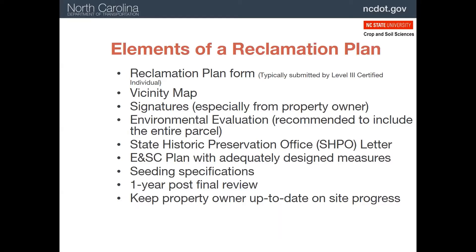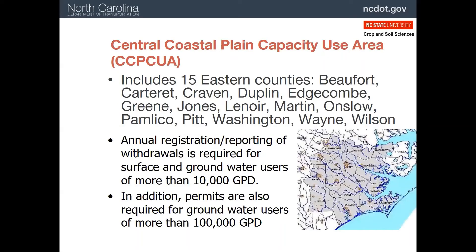Be sure to keep the property owner up to date on site progress. As mentioned earlier, borrow areas in the coastal plain usually require continuous pumping of groundwater to keep the area dry for working. If this occurs in these 15 counties, reporting of pumping of more than 10,000 gallons per day is required, and a permit is needed if you're going to be pumping more than 100,000 gallons per day. Most of the people in these counties rely on groundwater for their household use, so it is important that pumping is kept to a minimum.